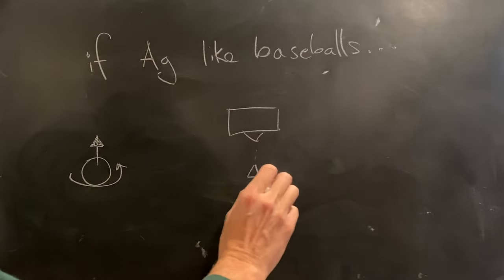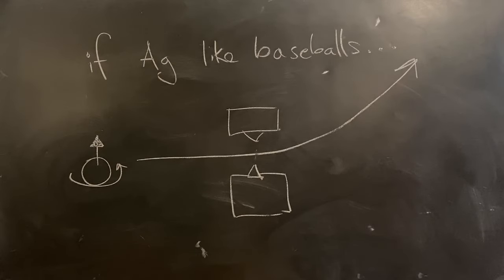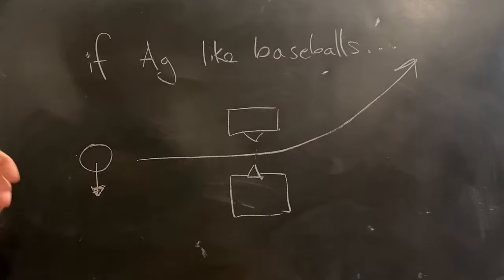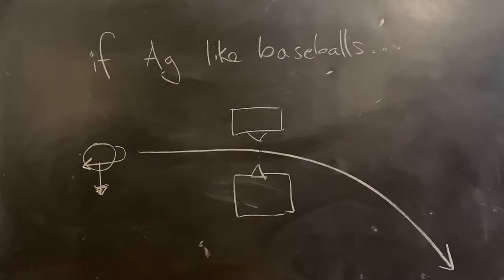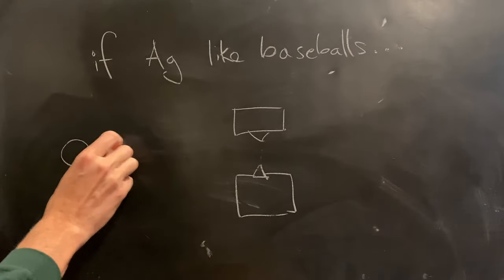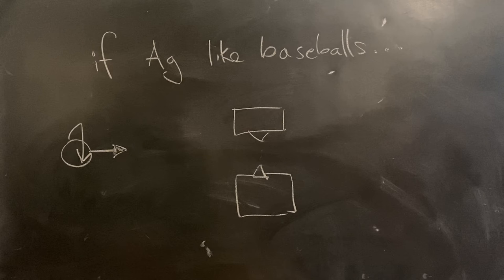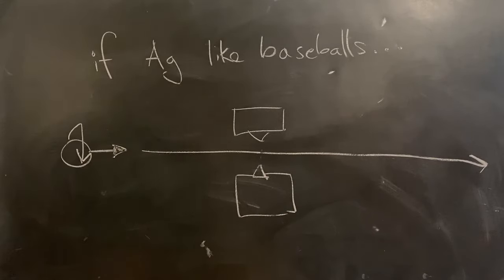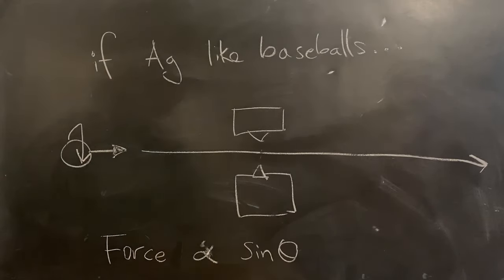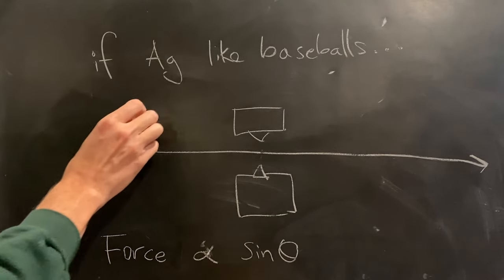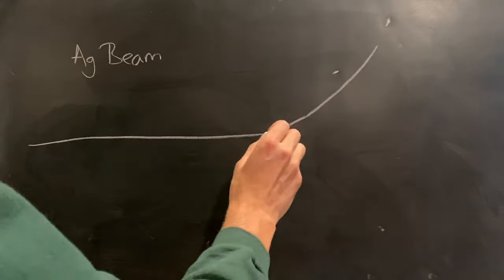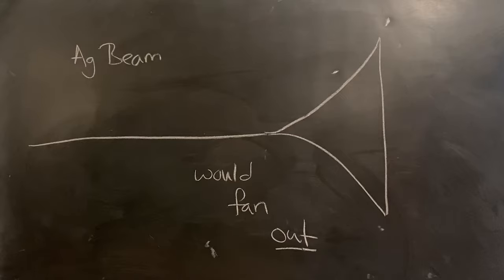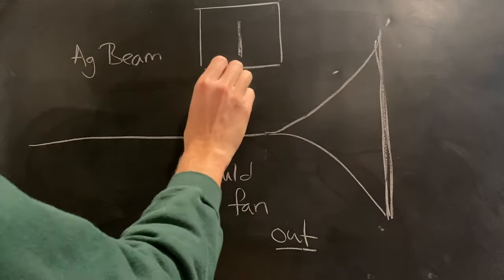If a silver atom approached the magnet with a spin pointed up, it would be kicked further upward, sending it off at an angle above the beam. If the silver atom approached with a spin pointed down, it would get kicked further downward, sending it off at an angle below the beam line. You might expect a third scenario where the silver atom's magnetic moment was pointed sideways, orthogonal to either of the previous choices, perhaps parallel to the beam line. Classical electrodynamics predicts that such an atom would be undeflected. The force imparted by the magnet was proportional to the angle between the spin of the individual particle and the beam line. All possible intermediate cases would fill in all other possibilities, so the beam would have fanned out — the silver atoms would form a vertical line on the screen.